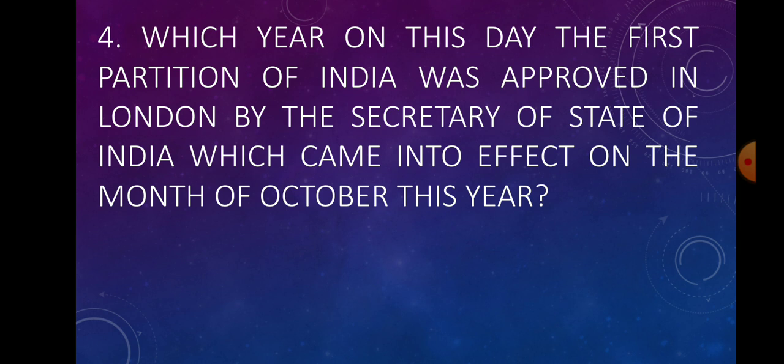Question number 4. Which year on this day was the first partition of Bengal approved in London by the Secretary of State of India, which came into effect in the month of October that year? Answer: 1905. The partition was announced by Lord Curzon, who was the then Viceroy of India.